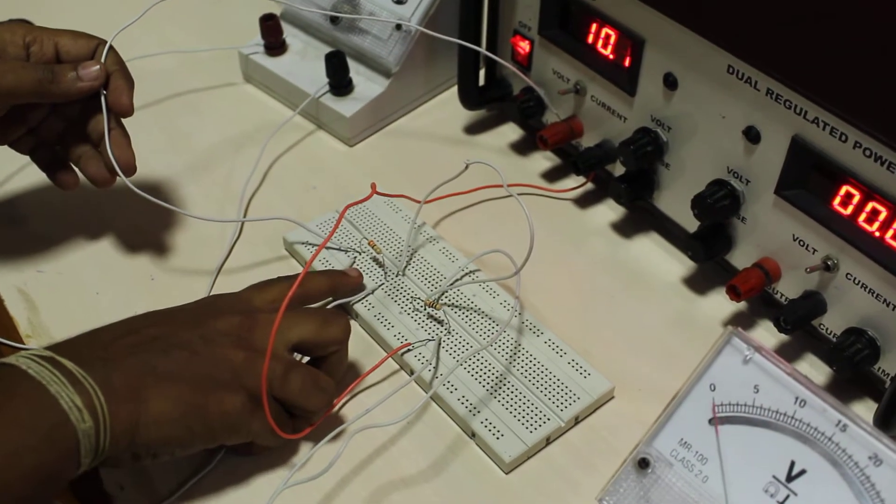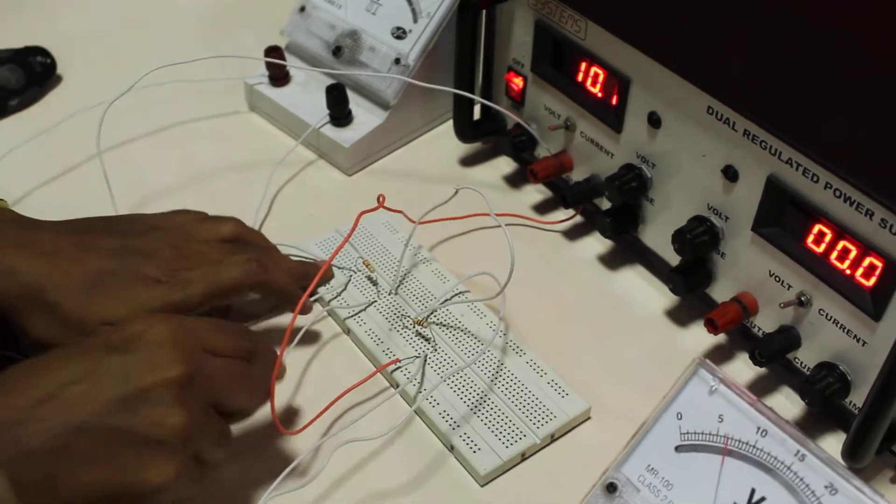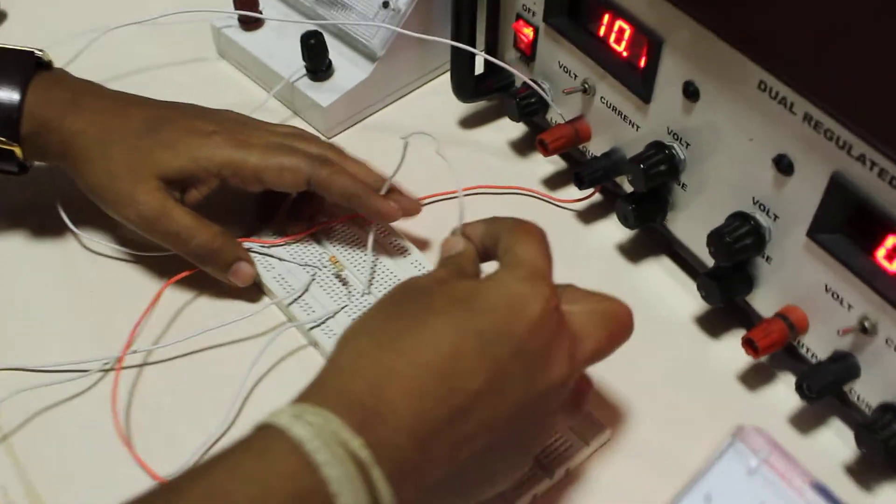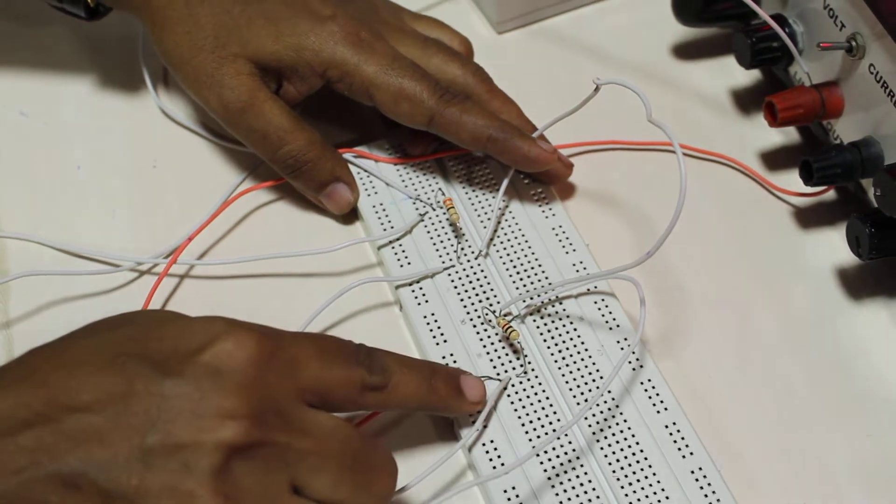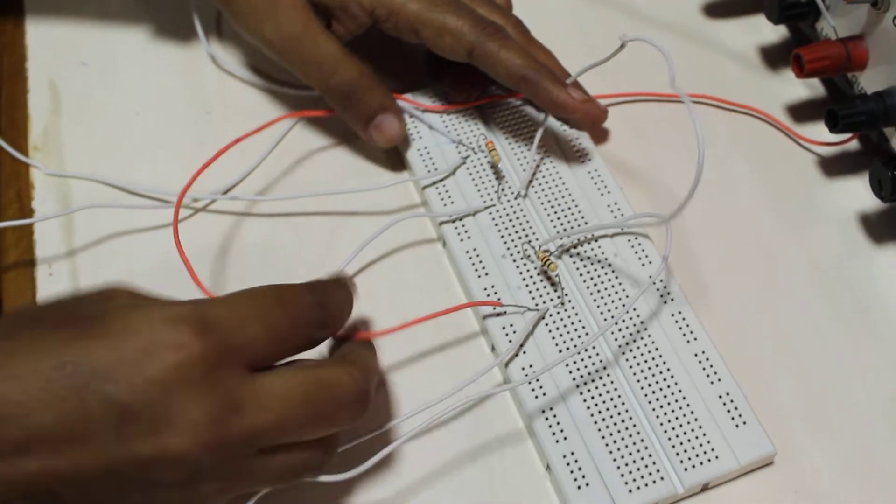Now we will move on to the connection. You have the positive supply which is given to a 330 ohms and the other end of the 330 ohms is in series connection. We have used a wire for shorting. It is given to a 1K resistor. From this 1K resistor, it has to be grounded.